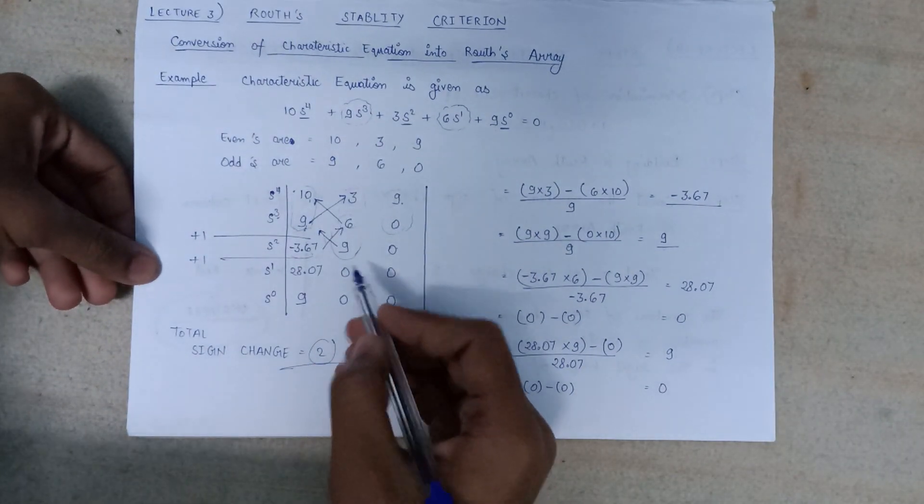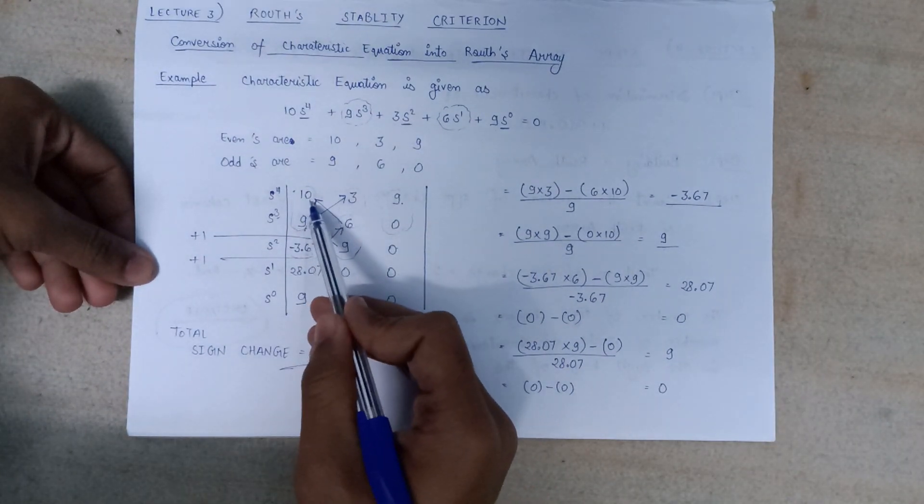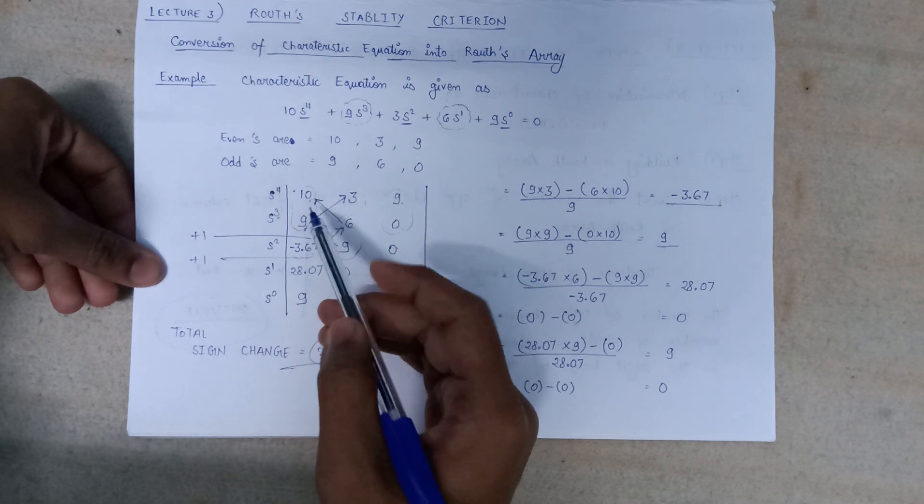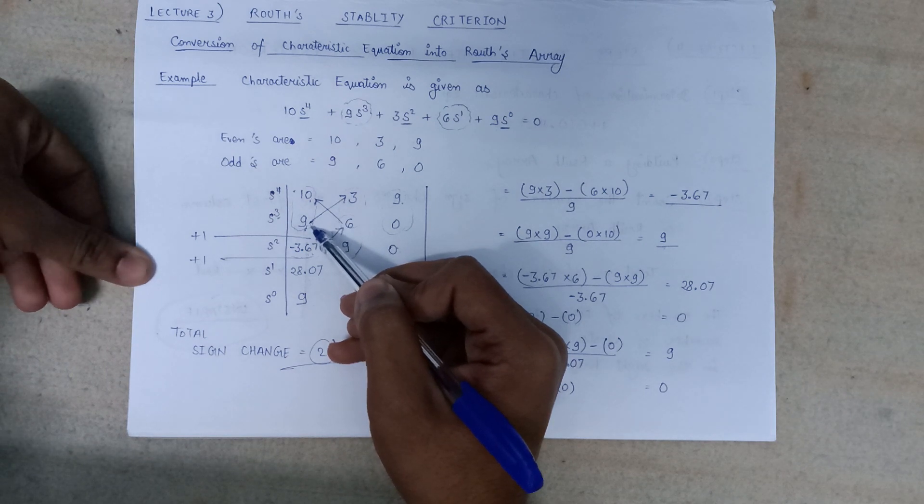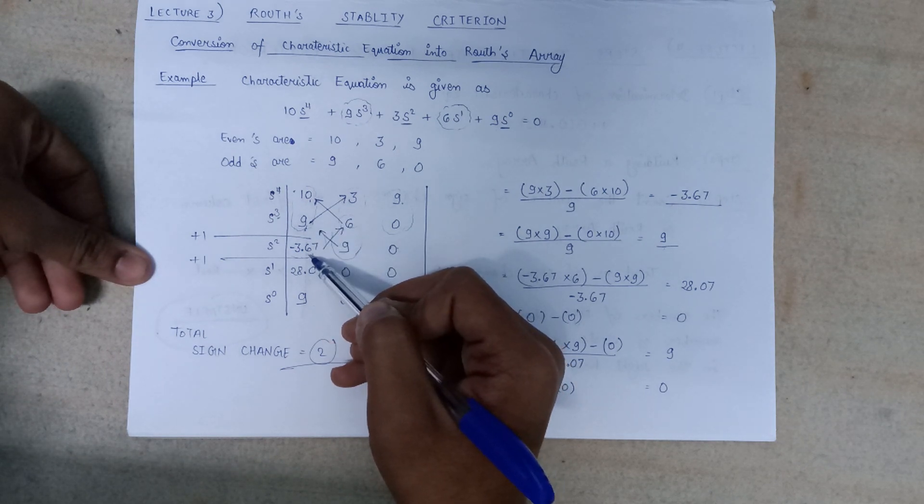Here is an example. In this example, the number of changes we need to count. So 10 is positive, 9 is also positive, but minus 3.67 is negative. So there is one sign change from positive to negative.